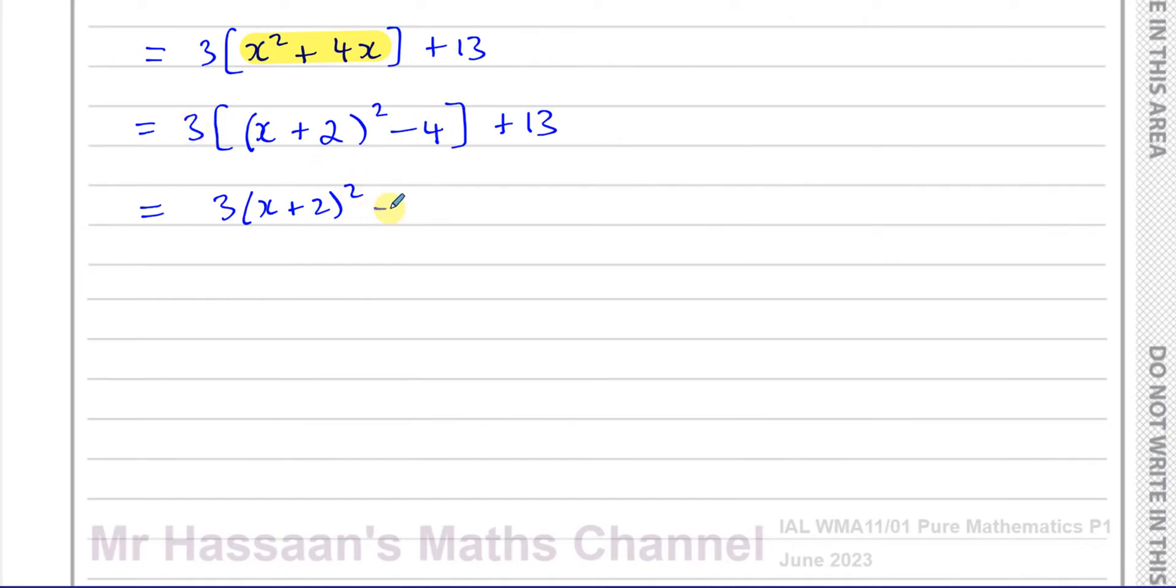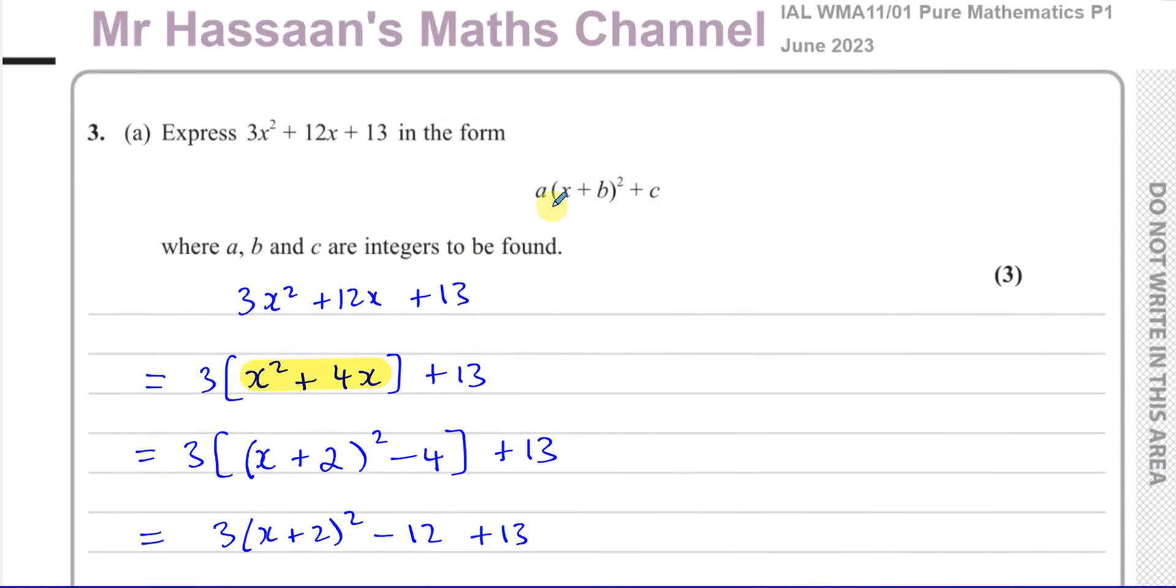We've completed the square, and it says where a, b, and c are integers to be found. So it says in this form, we don't have to state the values of a, b, and c. If you want to, you can. So in this case, a is 3, and b is 2, and c is 1.